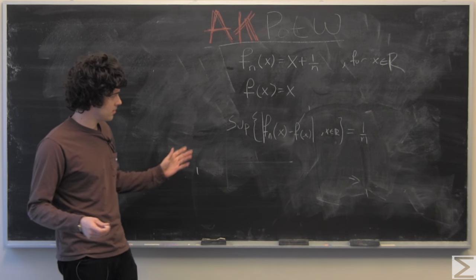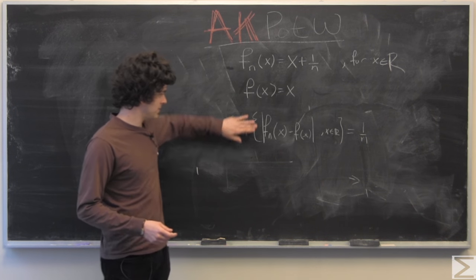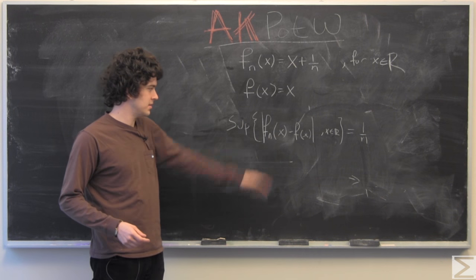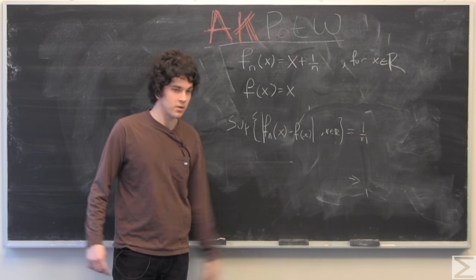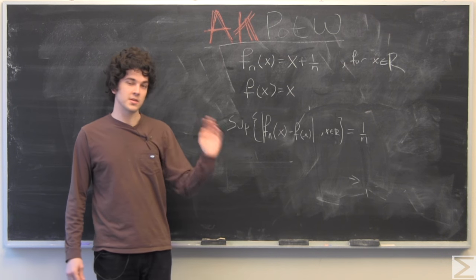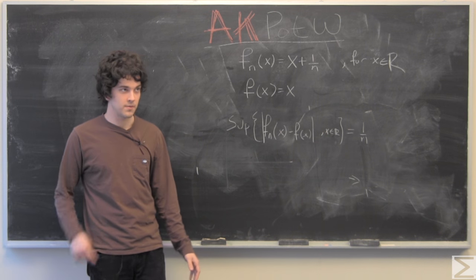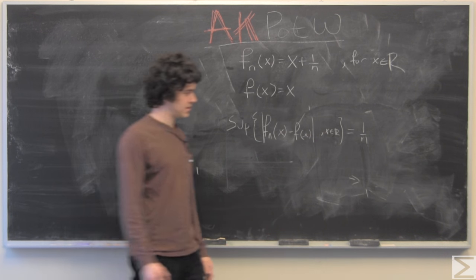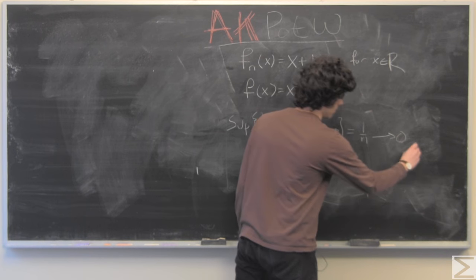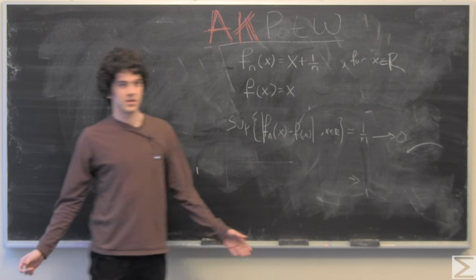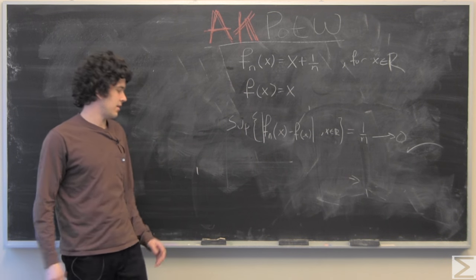So it doesn't matter, the distance, we could take away this supremum and just have the distance, it's going to be 1 over n, and for each successive function in our sequence, that's going to approach zero. So f n does indeed uniformly converge to f.